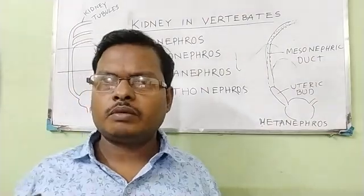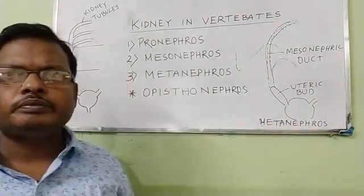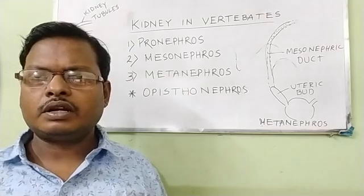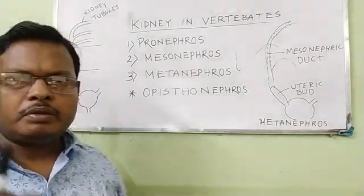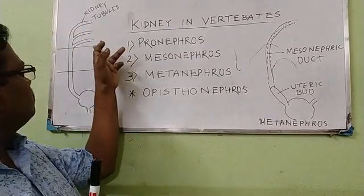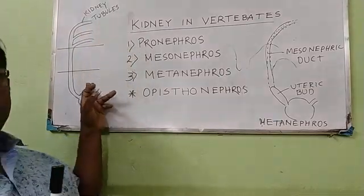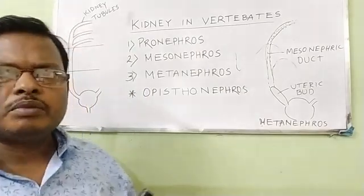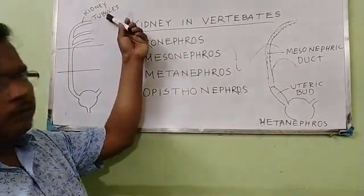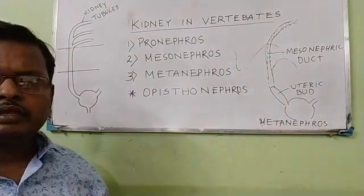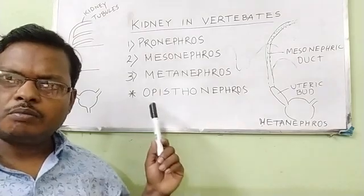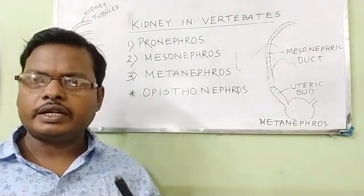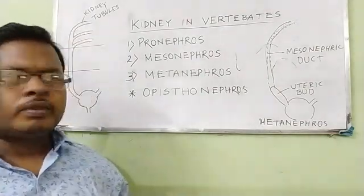The kidney develops from the nephrogenic mesoderm in the embryo. The anterior part of this mesoderm differentiates to form the Pronephros, the middle part forms the Mesonephros, and the posterior part forms the Metanephros. The kidney tubules of the Pronephros are distributed in the anterior part of the body, and hence it is also called the Head Kidney, found in the anterior region.